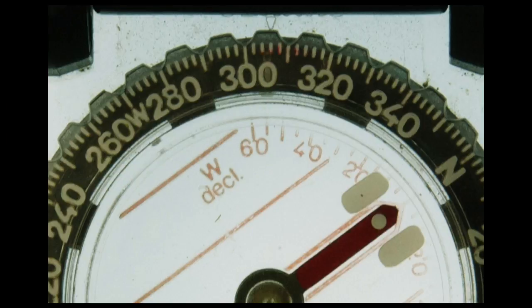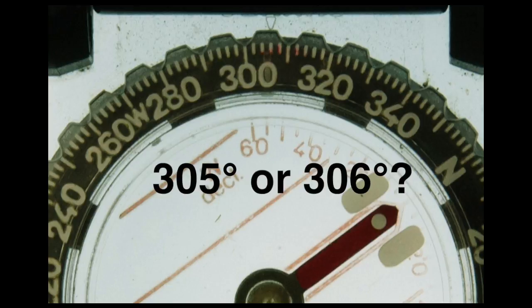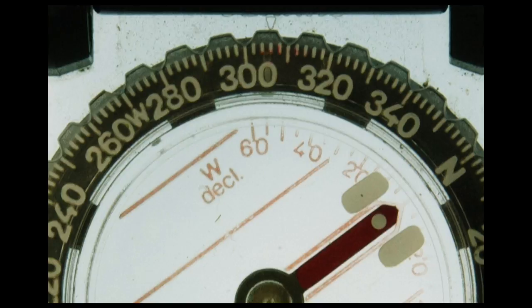Here's an example of a bad index line. Really, there are two index marks. One of them is the arrow molded into the clear plastic above the dial. The other is a now very worn bit of phosphorescent paint, visible here through the center of the last zero in 300. The two index marks are not even lined up with each other. So the bearing is either 305 degrees or 306 degrees? Hard to tell.